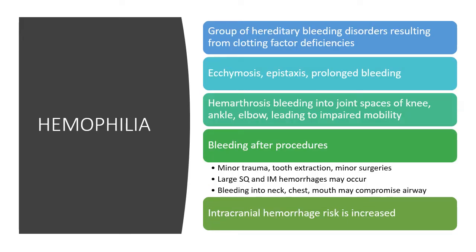Hemophilia is an X-linked recessive trait passed from the mother. Females are carriers and males are affected. There is variable severity, and about one third of cases are new mutations with no family history. Symptoms often don't appear until about six months of age, once the child becomes mobile — leading to injuries from falls and accidents, where you notice the child won't stop bleeding.